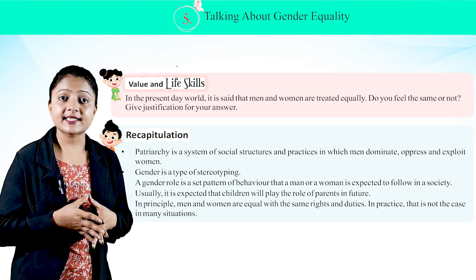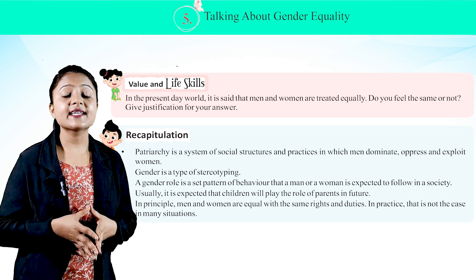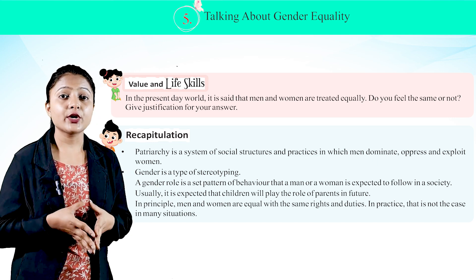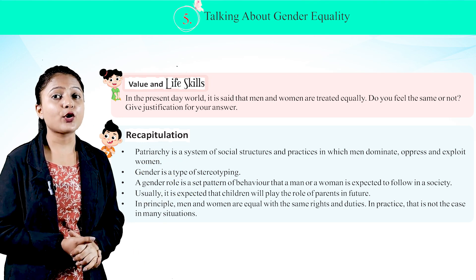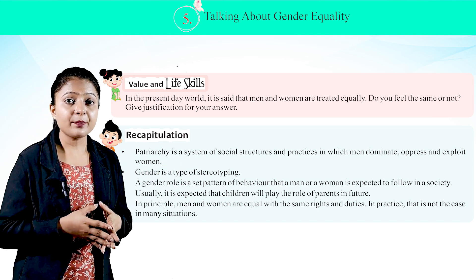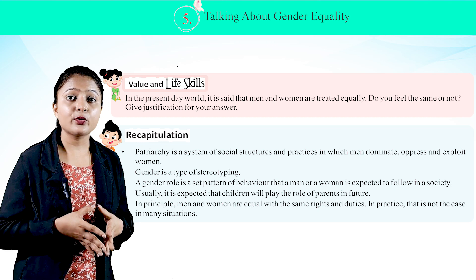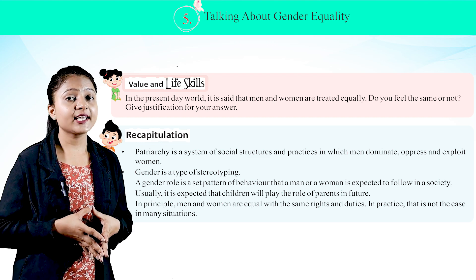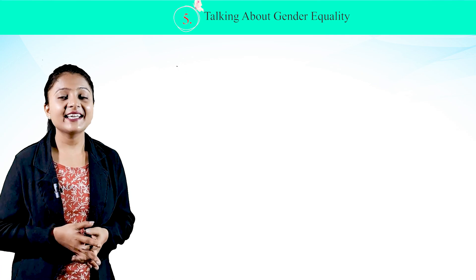Recapitulation: patriarchy is a system of social structure and practices in which men dominate, oppress, and exploit women. Gender is a type of stereotyping. A gender role is a set pattern of behavior that a man or woman is expected to follow in society, and it is usually expected that children will play the role of parents in future. In principle, men and women are equal with the same rights and duties — in practice, that is not the case in many situations. Thank you class. Let's meet again in the next chapter.